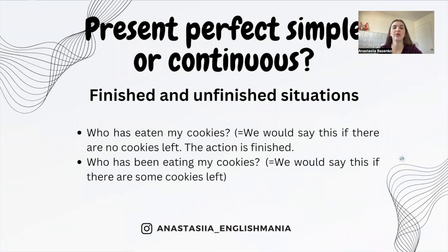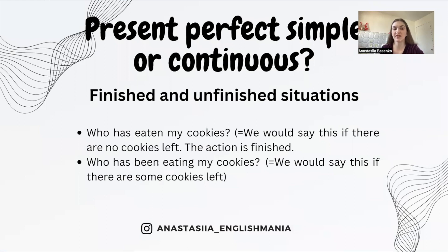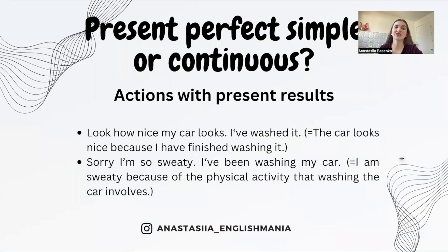With finished or unfinished situations, we use present perfect simple for finished actions in the past when we don't say when, and present perfect continuous for actions or situations that may not have finished, or have finished very recently. For example: 'Who has eaten my cookies?' — we'd say this if there are no cookies left, the action is finished. But 'Who has been eating my cookies?' — we'd say this if there are still some cookies left.